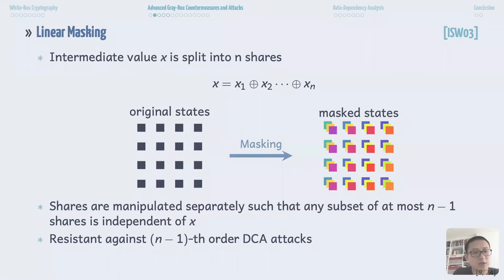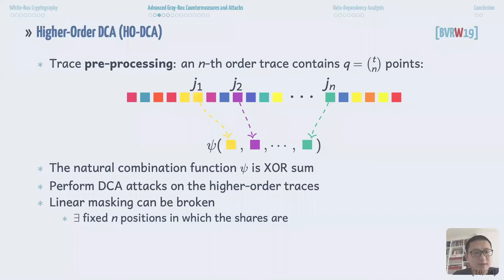Linear masking is a widely deployed gray box countermeasure. The idea is to split any key dependent sensitive intermediate variable in the implementation into n shares. Then the n shares are manipulated in a way such that any n-1 share is independent of x. Apparently, linear masking of n shares is able to resist against the n-1 order DCA attacks. The high-order DCA attack first preprocesses the computation traces and obtains high-order degree traces. Then apply standard DCA on the high-order traces. A high-order trace contains symbols combining any d tuples in the original trace. Hence, it has t choose n points where t is the original trace size and n is the attacking order.